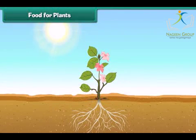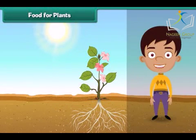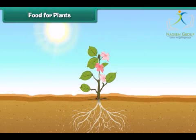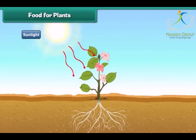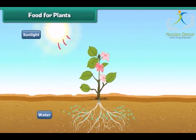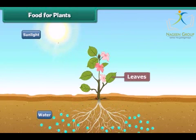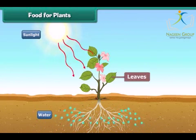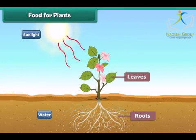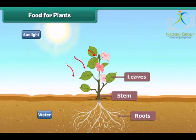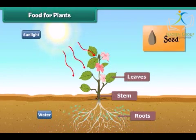Plants make their own food with the help of sunlight. Plants take water from the soil and prepare food in their leaves. The plant takes up some part of the food and the rest is stored in its roots, stem, leaves and seeds.